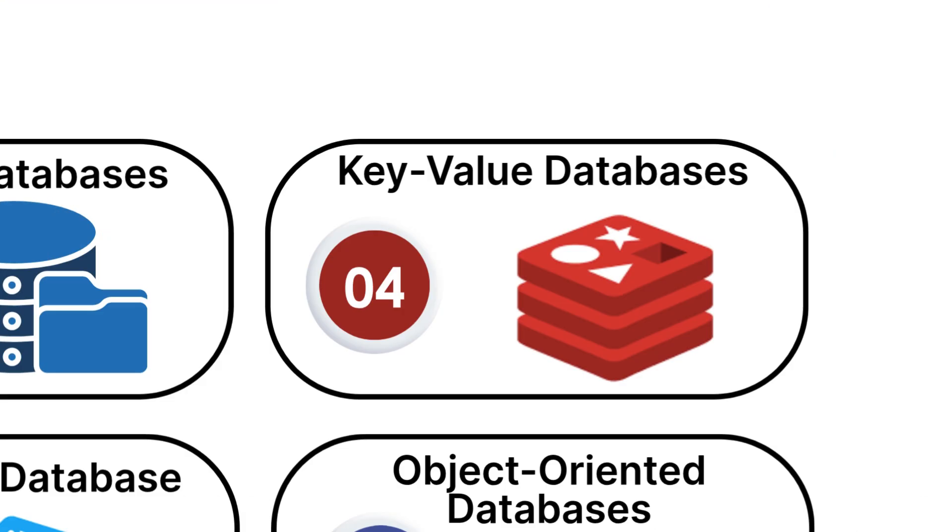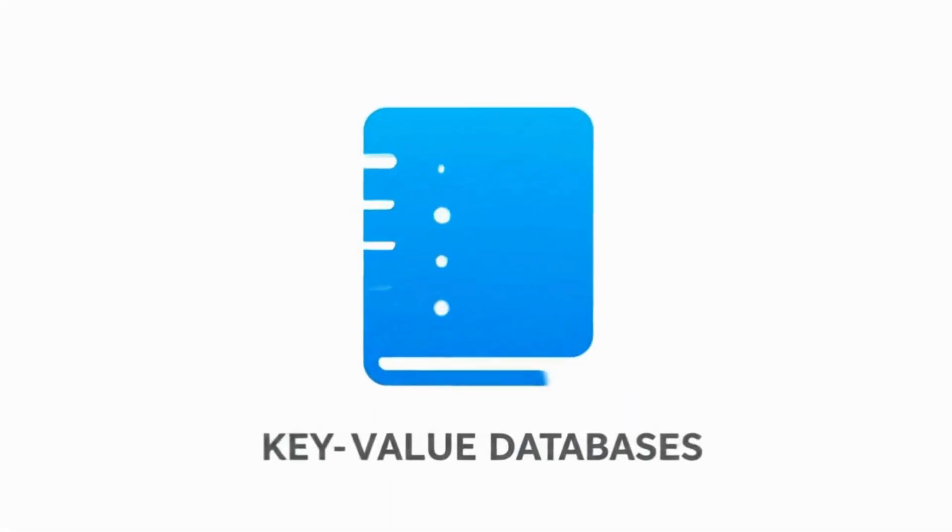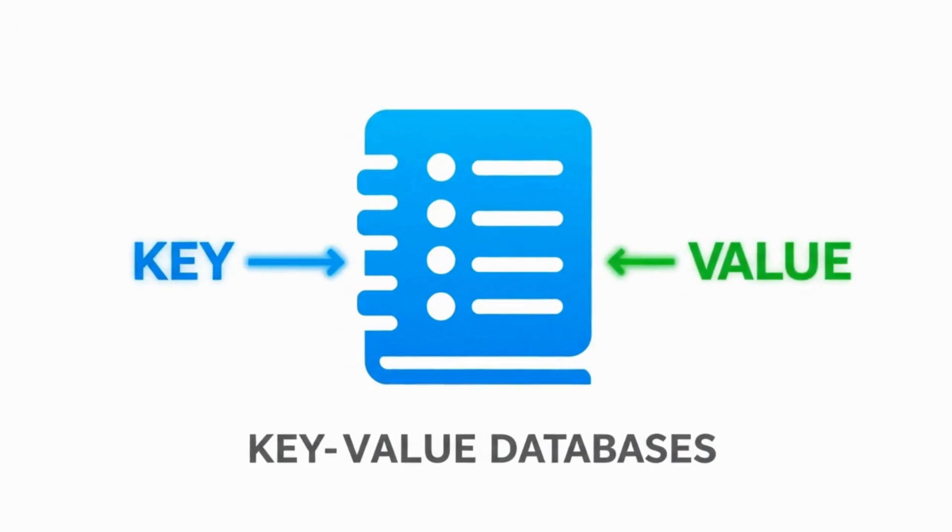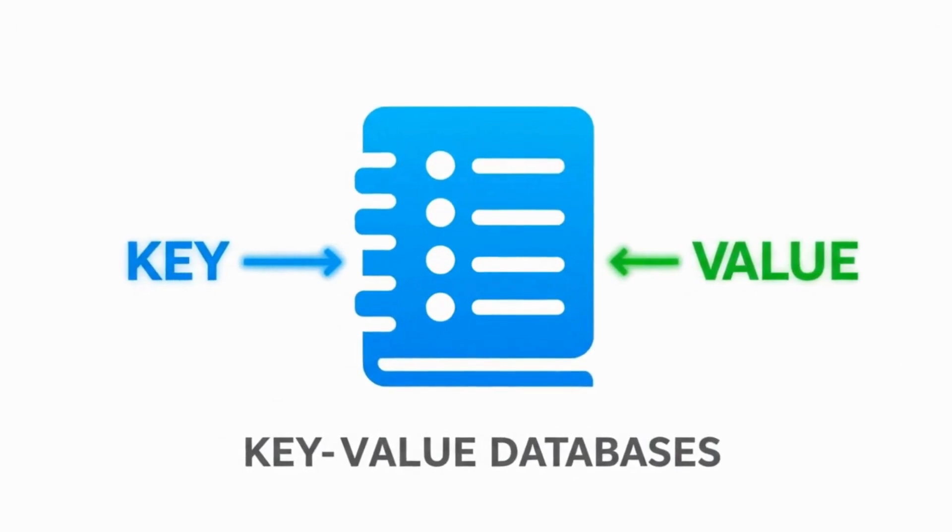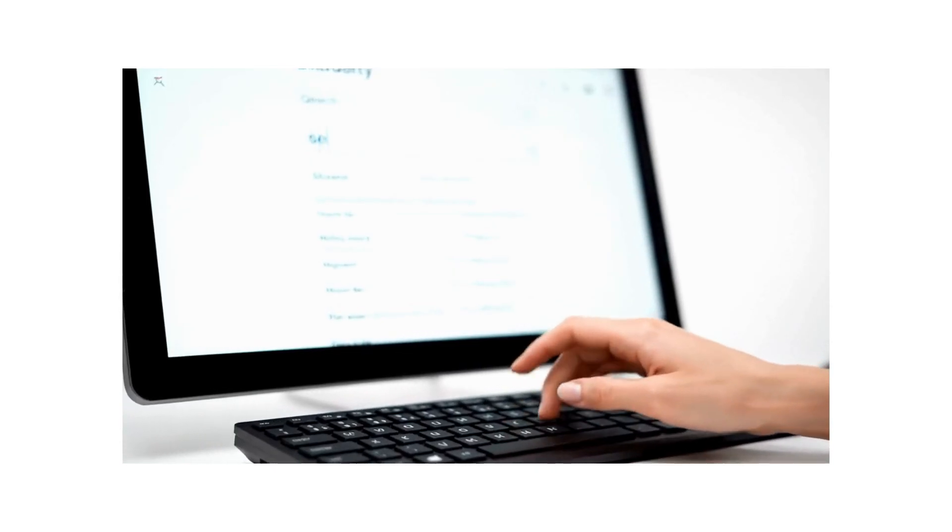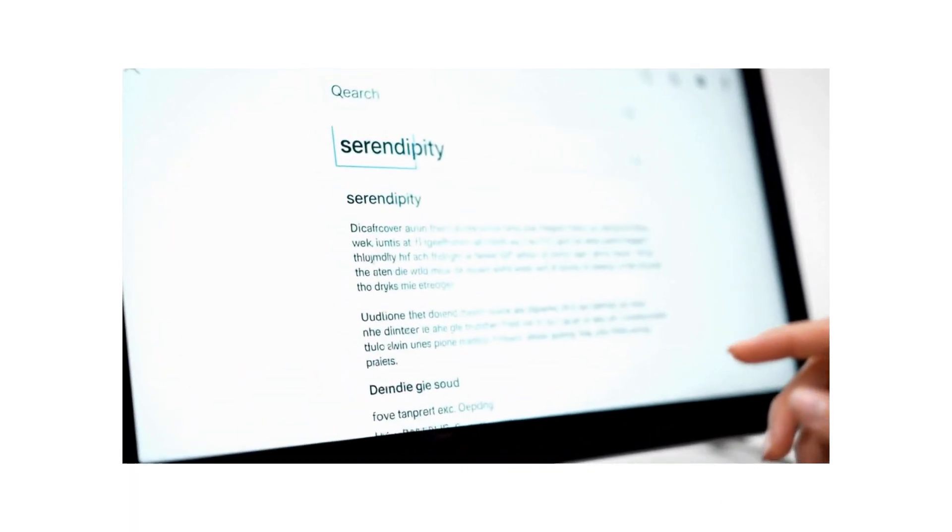Number four, Key Value Databases. Key Value Databases are the simplest type. Imagine a giant dictionary where every piece of information has a unique name, the key, and its content, the value.